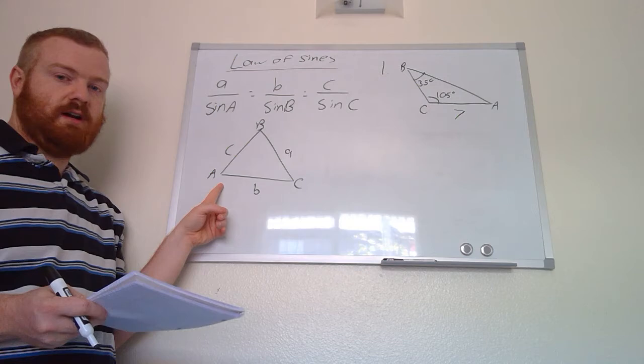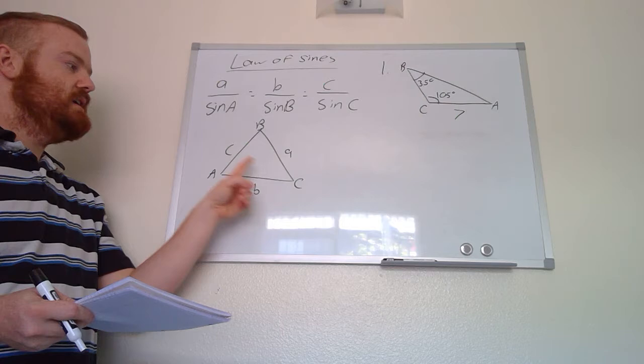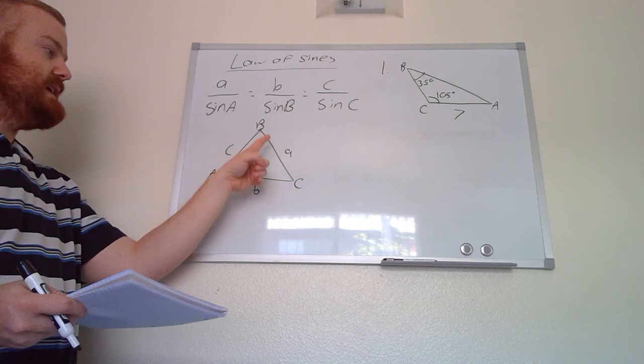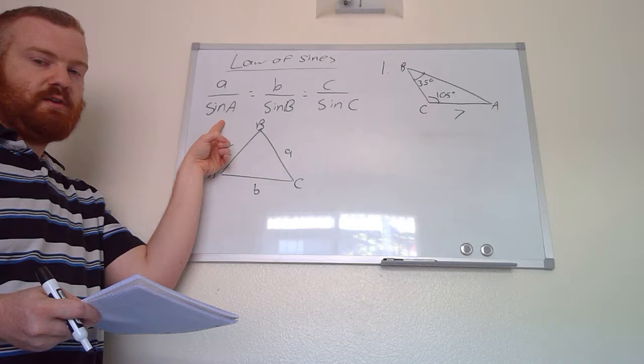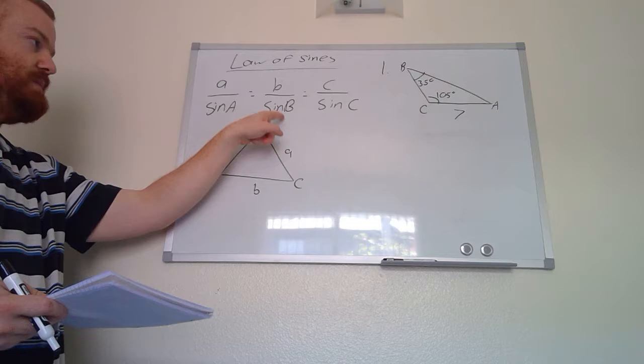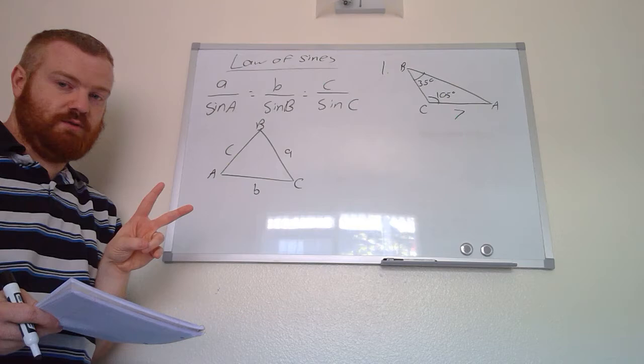What the Law of Sines says is: for any triangle ABC with angles labeled A, B, and C, where side a is opposite angle A, side b is opposite angle B, and side c is opposite angle C, we have the equation: a over sine A equals b over sine B equals c over sine C. When we actually solve, we're only going to be dealing with two fractions at a time.